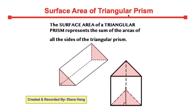Now the surface area of a triangular prism is going to be the sum of all the sides of a triangular prism.